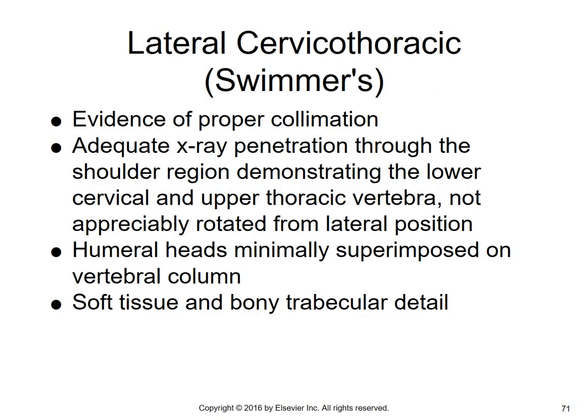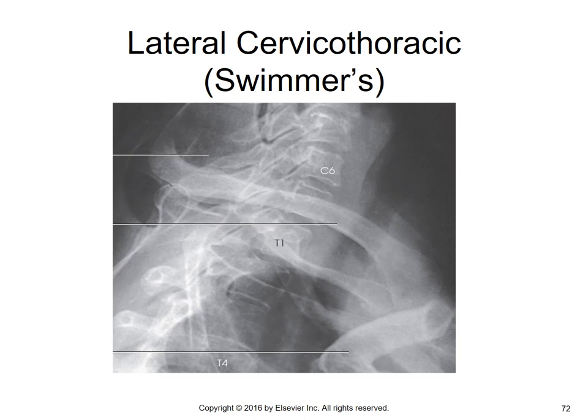For the swimmers: proper collimation, adequate penetration through the shoulder region and upper thoracic vertebrae. Vertebrae are not appreciably rotated from the lateral position. Humeral heads are minimally superimposed on the vertebral column. Soft tissue and bony trabecular detail are seen. On a swimmers image you can see overlap from the clavicles, but it does give a good view of C7 when you can't get that on the Grandy method.